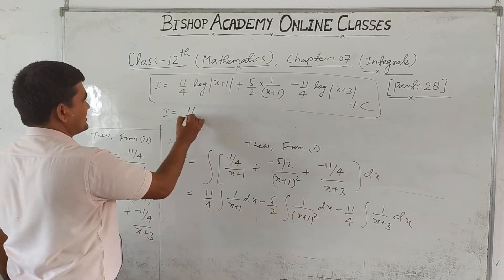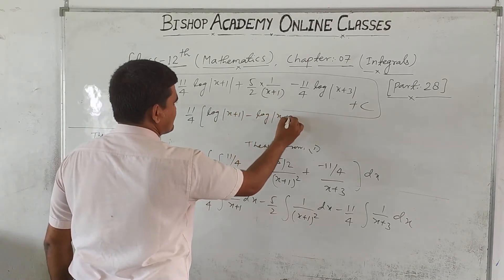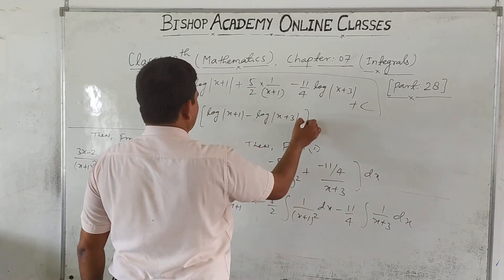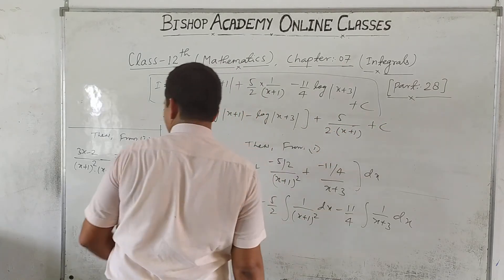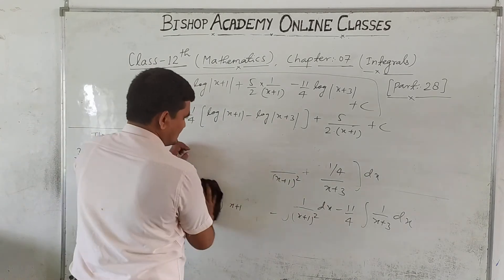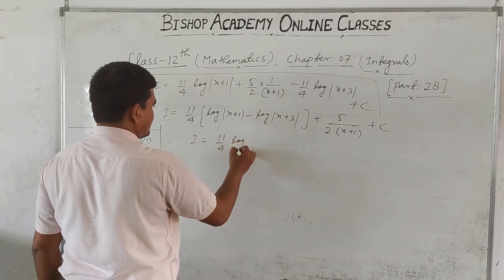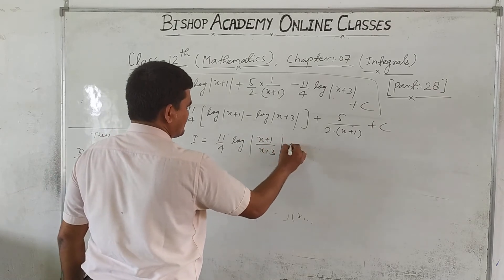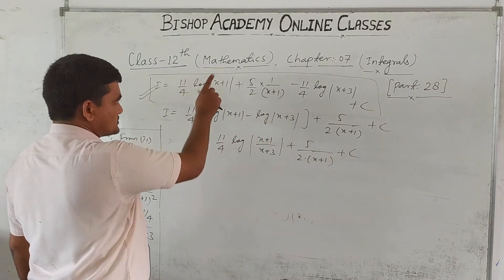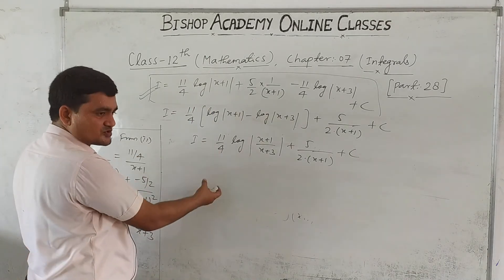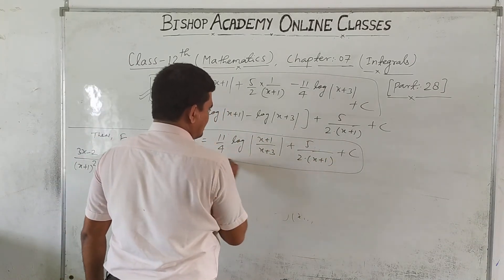Therefore I = (11/4)[ln|x+1| - ln|x+3|] + 5/(2(x+1)) + C. Using the log rule, ln a - ln b = ln(a/b), this simplifies to I = (11/4) ln|(x+1)/(x+3)| + 5/(2(x+1)) + C. This is the required solution.